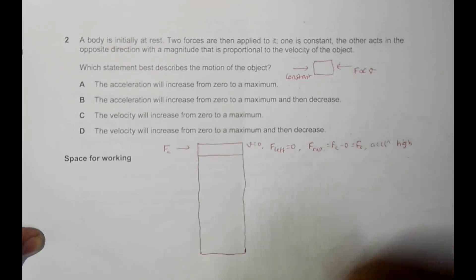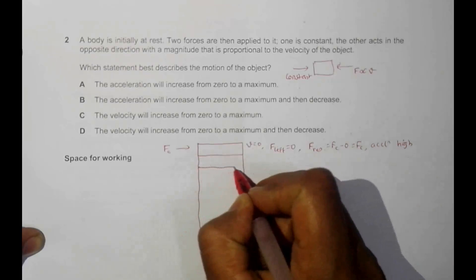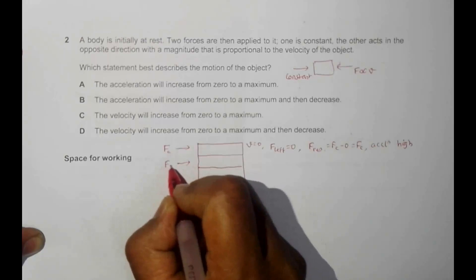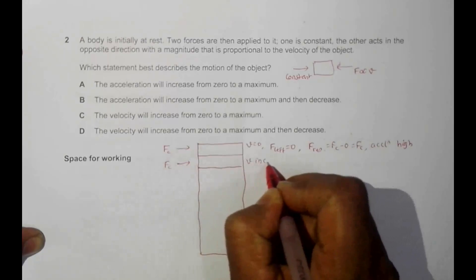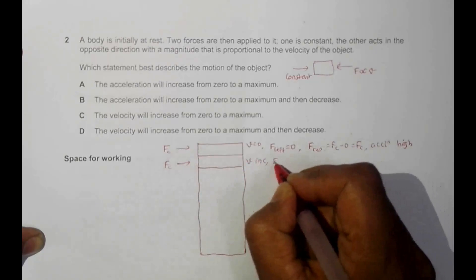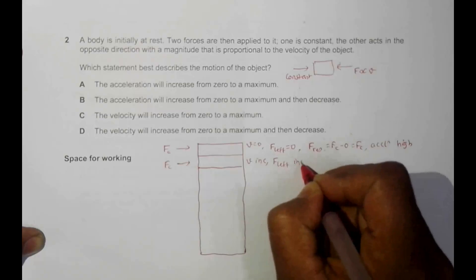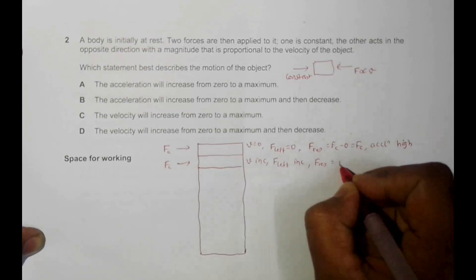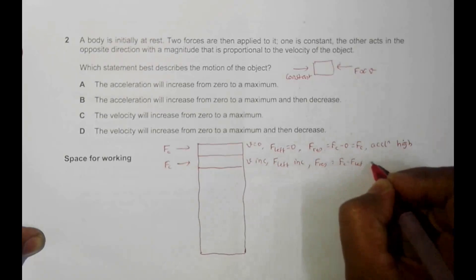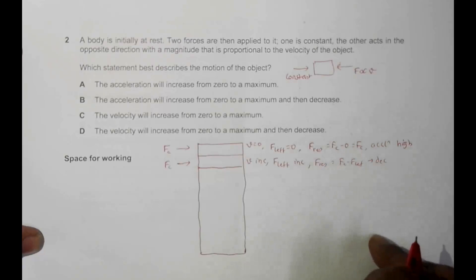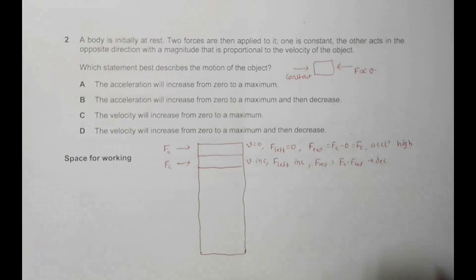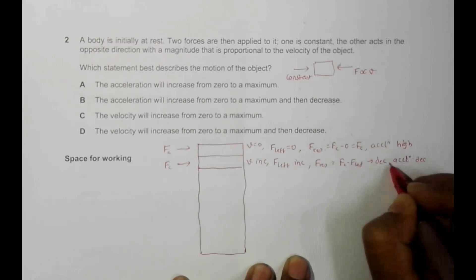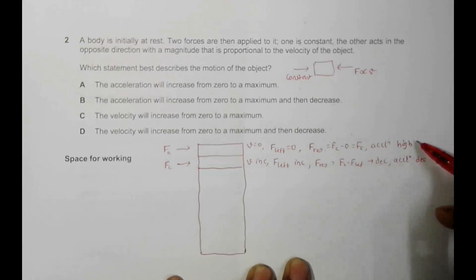After some time, since there is acceleration, velocity slightly increases. As V increases, F left also increases. That means the resultant force equals FC minus F left, so the resultant force decreases, and therefore acceleration decreases.